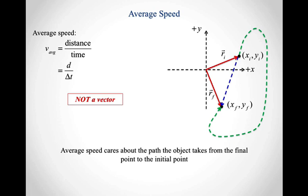So the tradeoff that we're making here is, because it's not a vector problem, it's a scalar problem, mathematically it's just much easier. But I have to have more information. I have to have, in some way, kept track of exactly where it went, because the average speed cares about the path the object takes from the final point to the initial point.